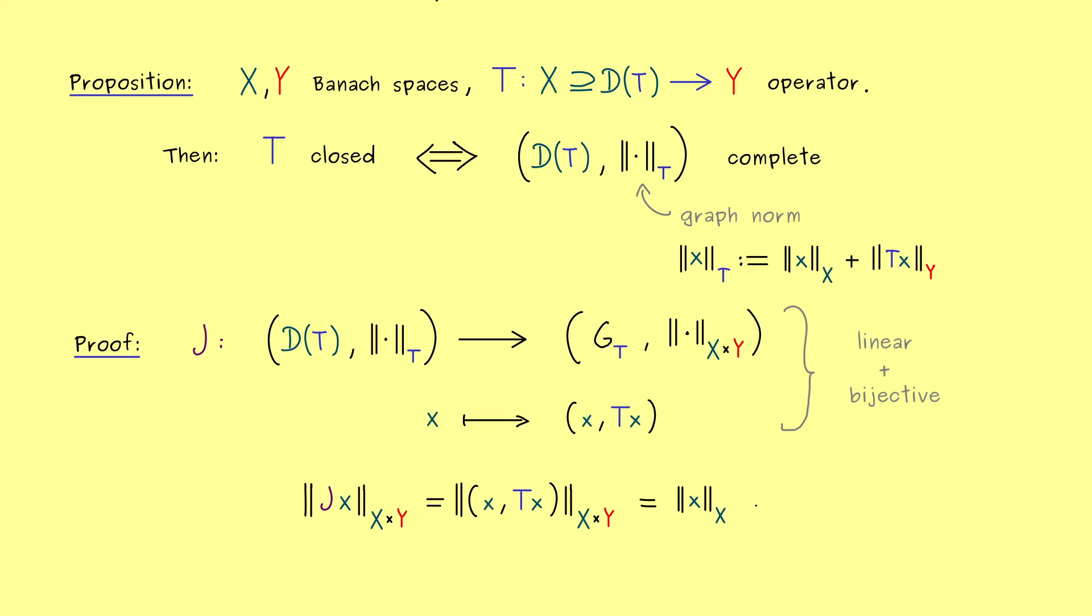So we have the norm of the first argument plus the norm of the second argument in this pair. And then we immediately see this is exactly the graph norm of the point x. Indeed this also explains the name. This is why we call it the graph norm from the beginning.